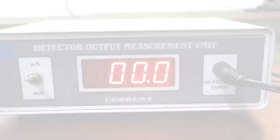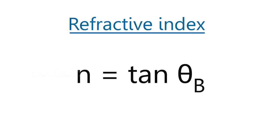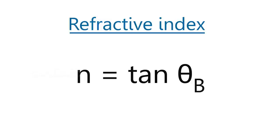The intensity of the light is minimum, that is almost zero, at Brewster's angle θb. Knowing θb, refractive index is calculated from the formula n equals tan θb.